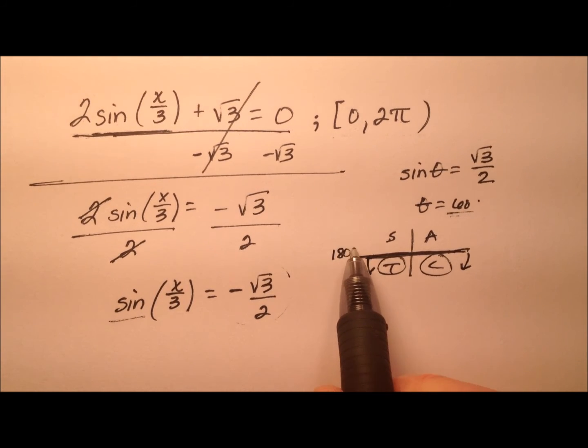So over here at the negative x-axis, I have 180 degrees, so we'll add 60 to that to get 240 degrees.